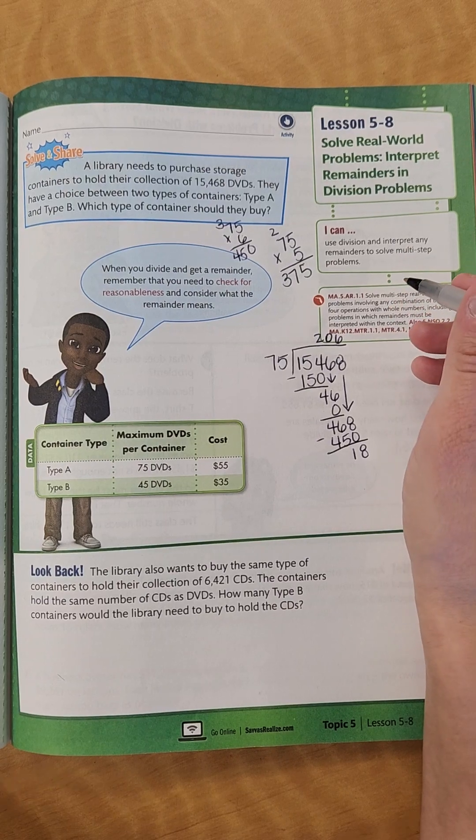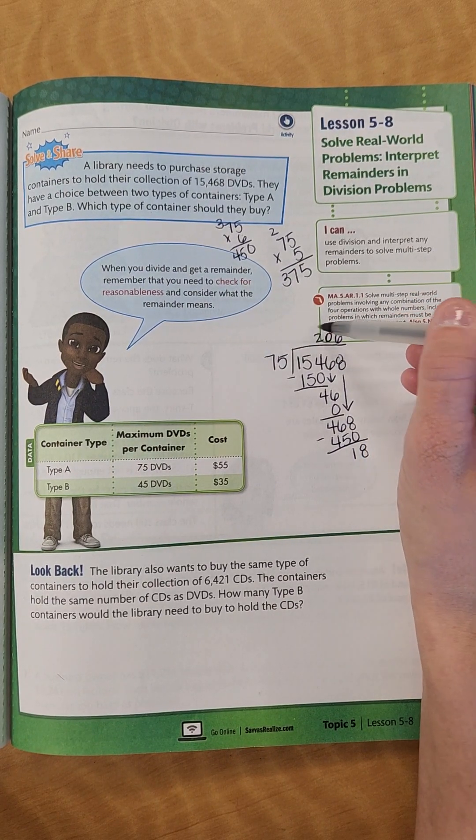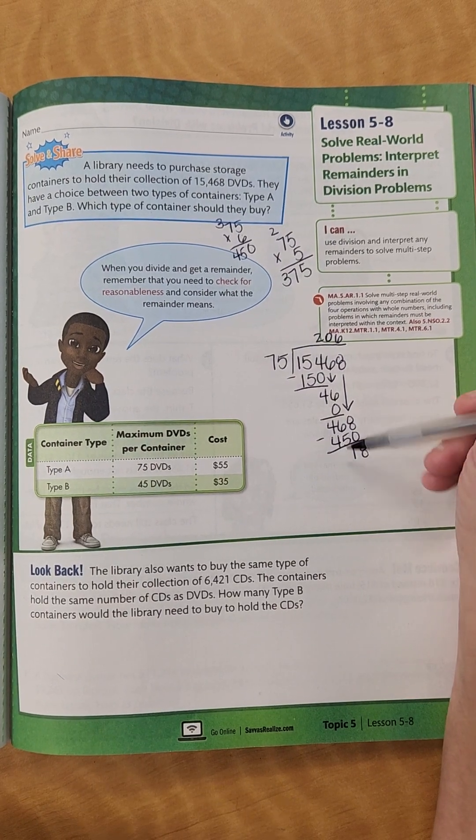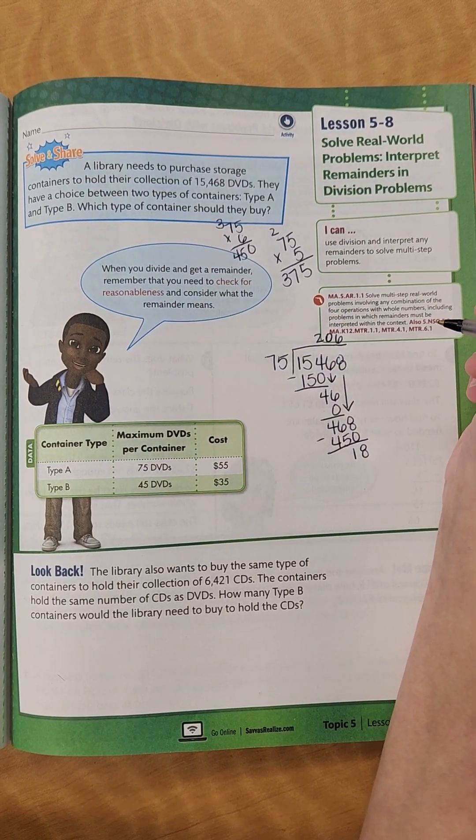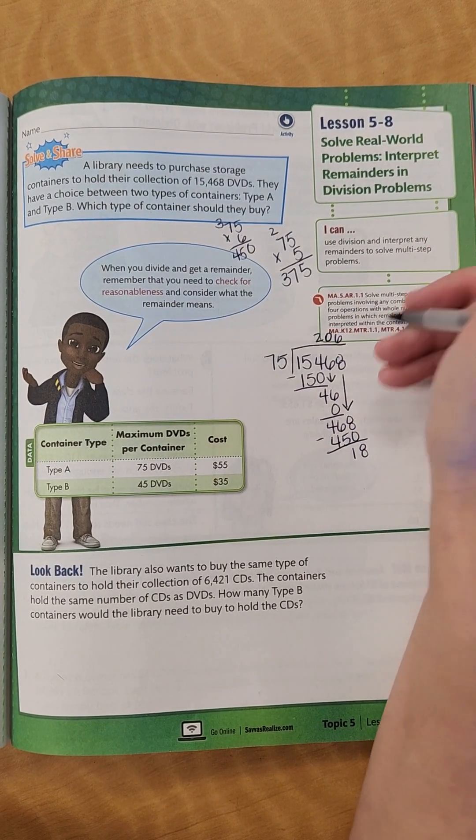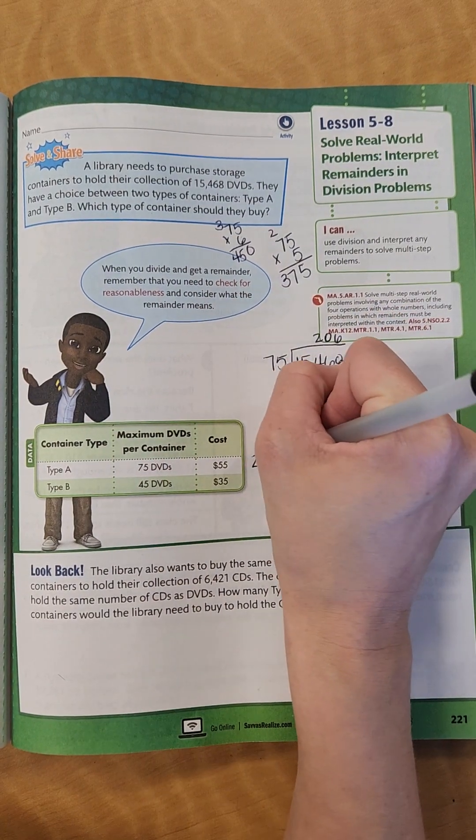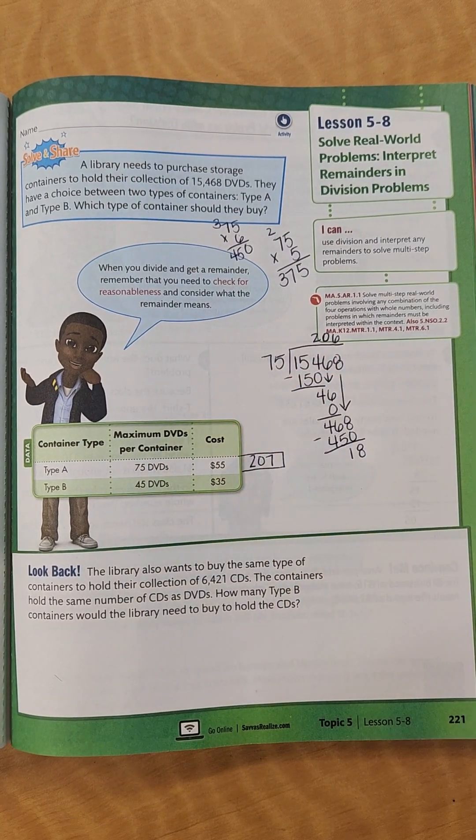Now, I want you to think about this. We would have to buy, we couldn't just leave that remainder. We would need to buy another container to hold that. So we would have 206 plus an additional one to hold the remaining. So if we did type A, we would need 207.